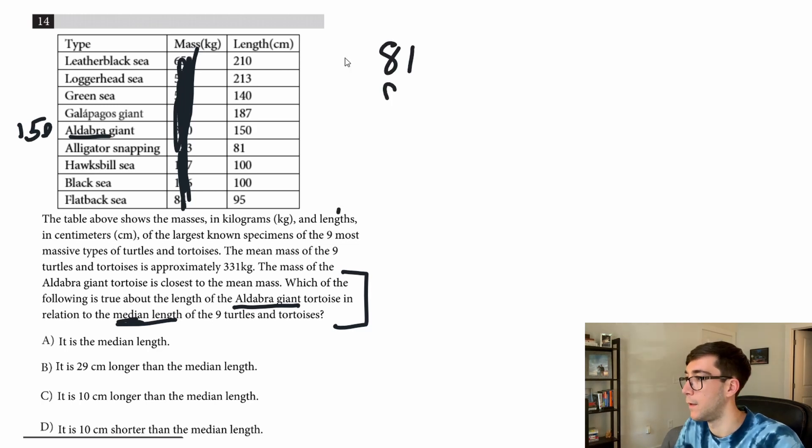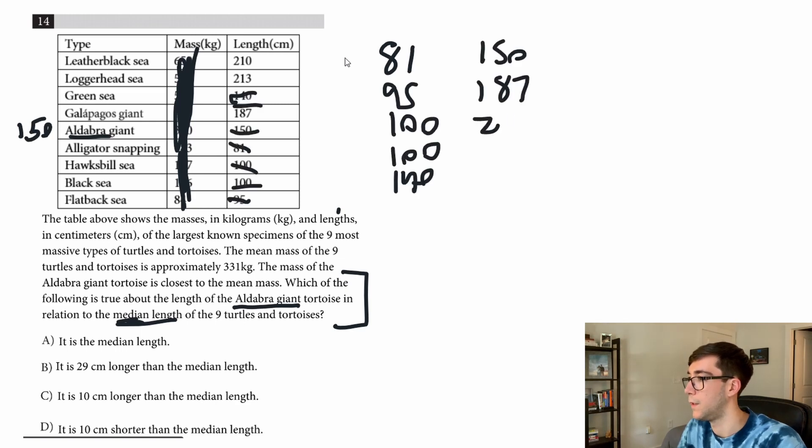So I'll write all the numbers over here in order and search for the median. 81, 95, 100, 100, 140, 150, 187, 210, and 213. And start chopping off the ends. 1, 1, 2, 2, 3, 3, 4, 4. So the median is 140.